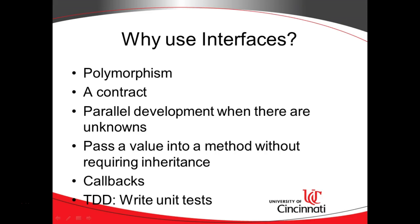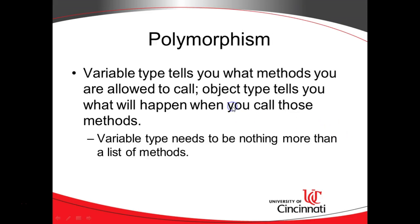Let's start with polymorphism. This is a word you may have heard, but even if you haven't, you might understand the concept. In polymorphism, a variable type tells you what methods you're allowed to call. The object type tells you what will happen when you call those methods. For that reason, a variable type only needs to be a list of methods — it does not need to contain behavior.